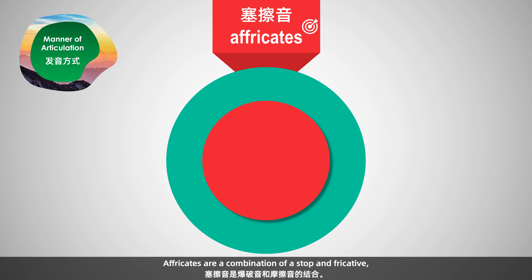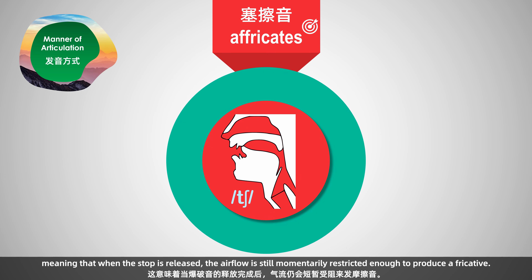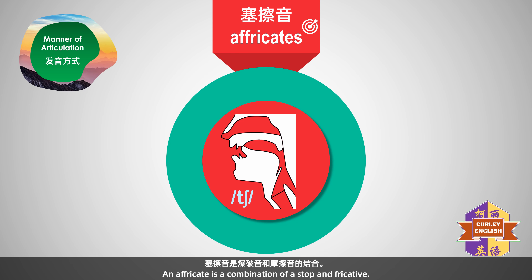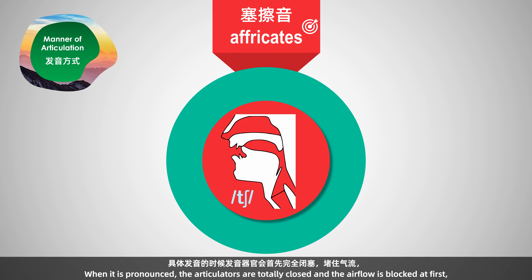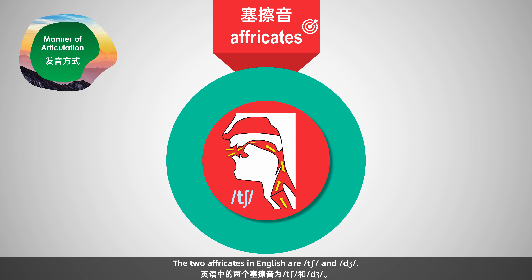Affricates are a combination of a stop and fricative, meaning that when the stop is released, the airflow is still momentarily restricted enough to produce a fricative. 塞擦音是爆破音和摩擦音的结合。发音时，发音器官会首先完全闭塞堵住气流，然后会突然打开一条狭窄的缝隙，使气流从中挤出而摩擦成音。The two affricates in English are /tʃ/ and /dʒ/.